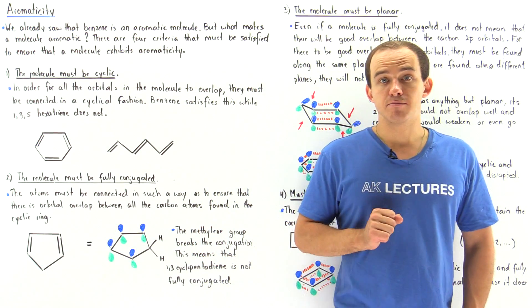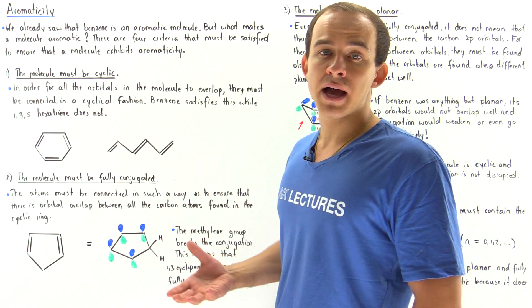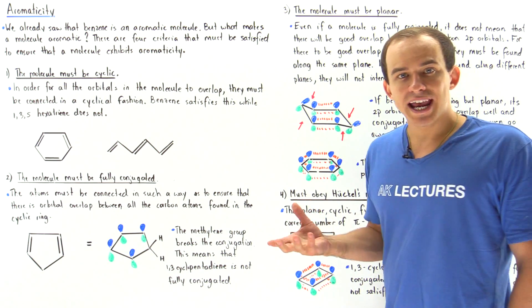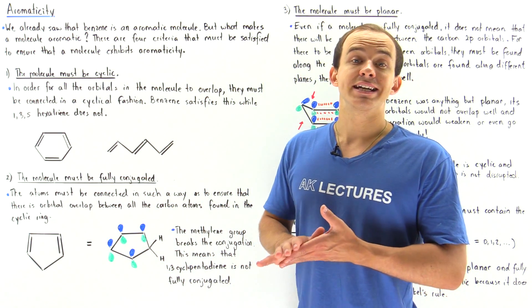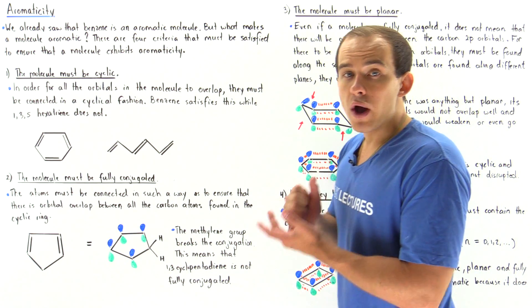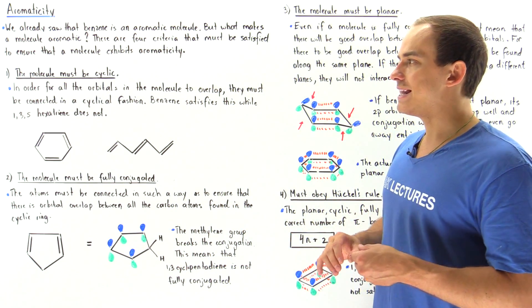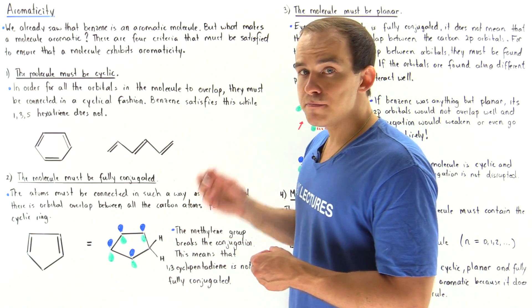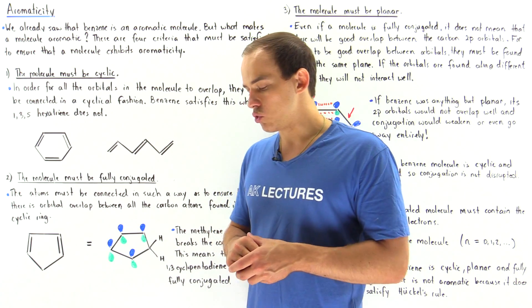In our discussion on the benzene molecule, we said that benzene exhibits aromaticity, so it's an aromatic compound. This basically means that our molecule is conjugated and very stable. Do other aromatic compounds actually exist? And in general, can we describe a certain compound and determine whether or not that compound is actually aromatic? That's exactly what we're going to look at in this lecture.